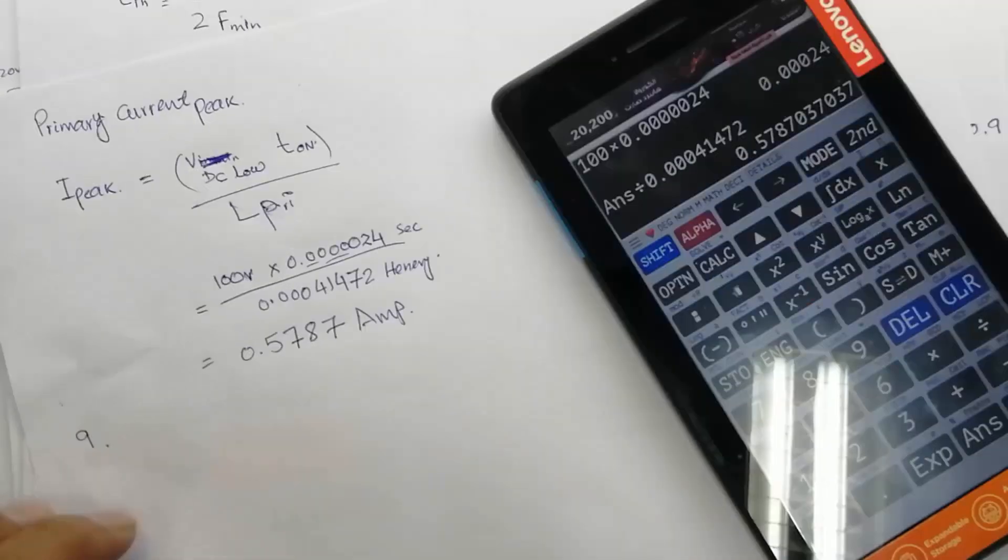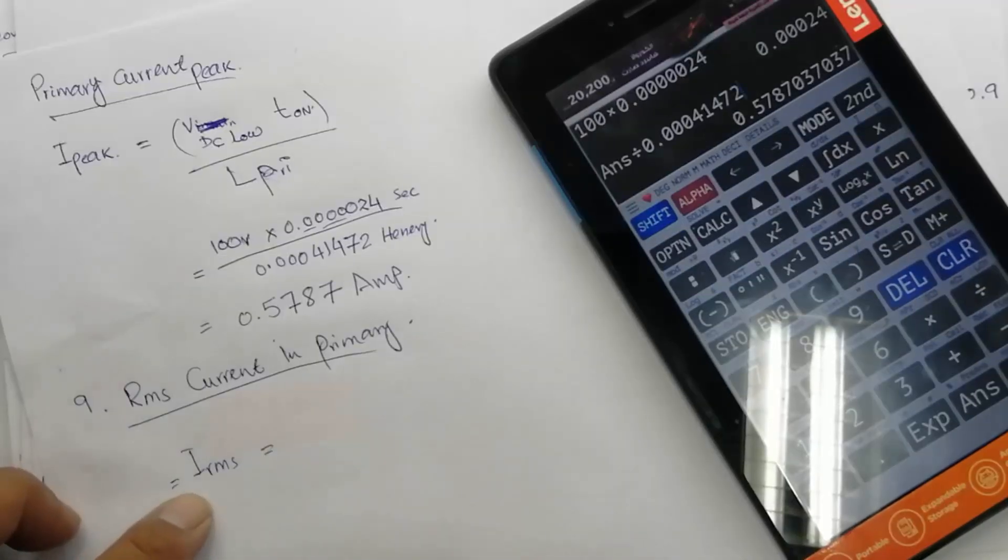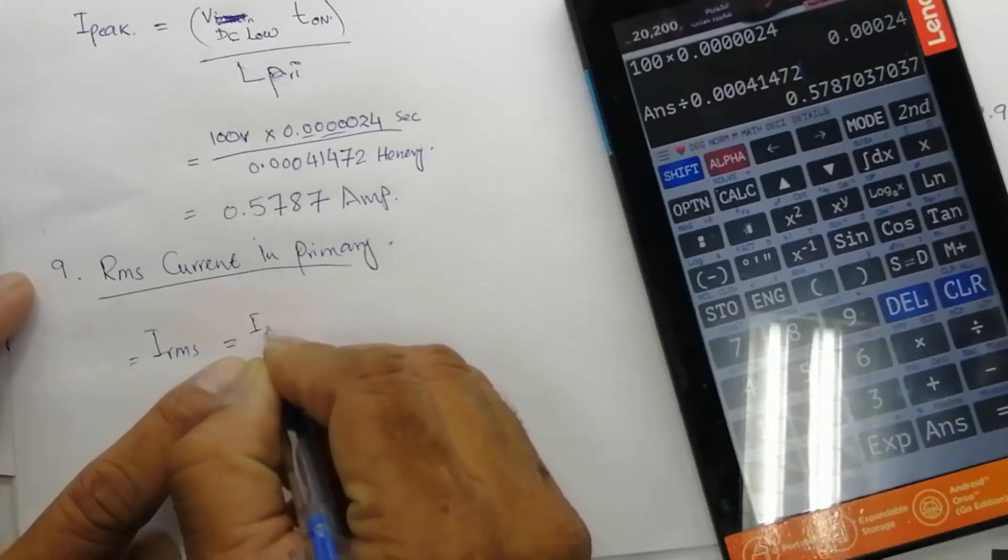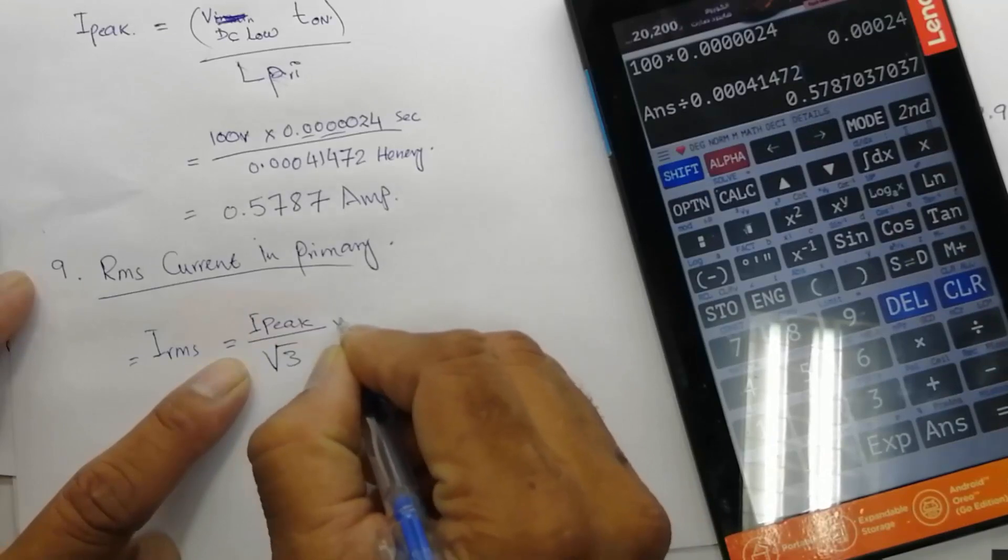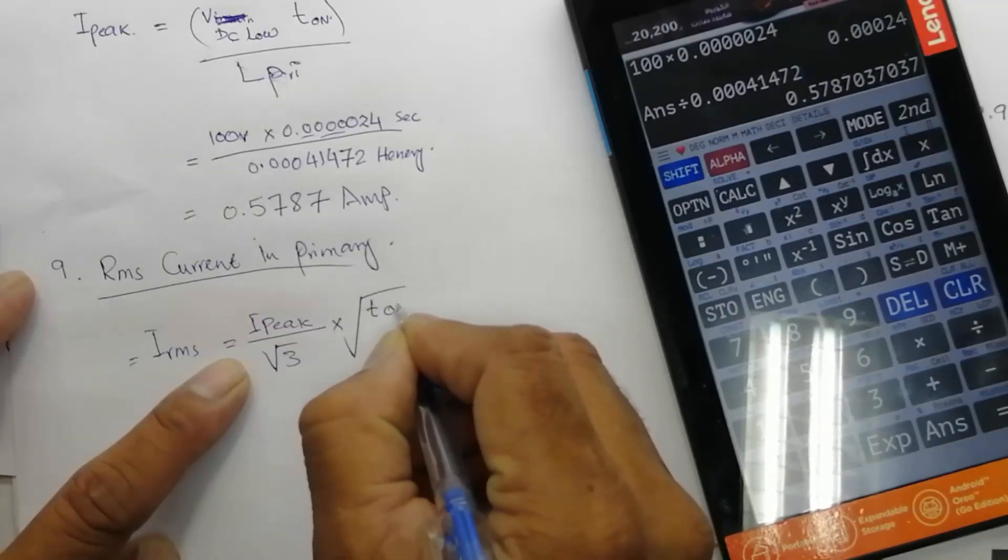And now we can calculate RMS current. I_rms equals I_peak divided by square root of 3, multiplied by time on divided by T.